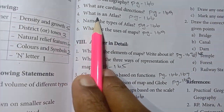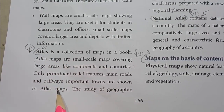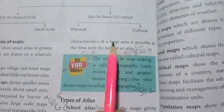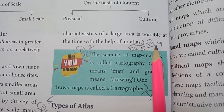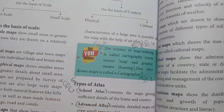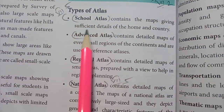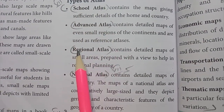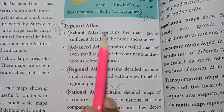4th one: what is an atlas? — page number 166. Atlas — the bold letters are clear. Refer to the 6th line on the right side: characteristics of a large area is possible with the help of an atlas. 5th one: name the types of atlas — page number 166. Types of atlas: school atlas, advanced atlas, regional atlas, national atlas.